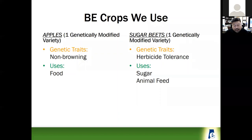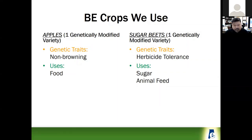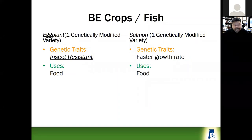I'm still waiting for the Arctic apple down here in the South, but I've heard great things about it. The industry is also trying to incorporate that same technology into honeycrisp apples. Sugar beets is another one that most people are not aware of — 49% of our sugar actually comes from sugar beets, not sugar cane.